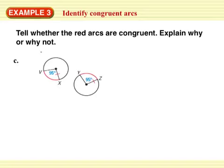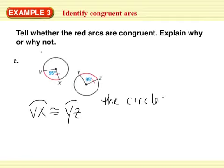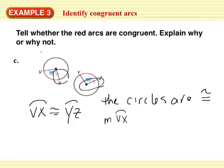Tell whether the red arcs are congruent. Explain why or why not. With this one I have arc VX is congruent to arc YZ because the circles are congruent. You know the circles are congruent because each radius is congruent to the other. So the measurement of arc VX is equal to the measurement of arc YZ.